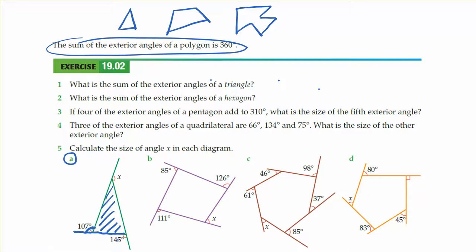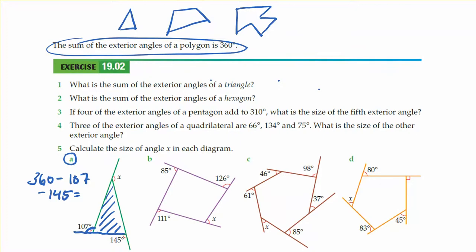So if these are supposed to add up to 360, then to solve for that we would go 360 minus 107 minus 145, and we would get our answer, which is 108 degrees.